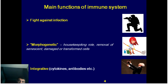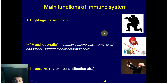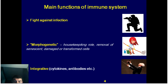Main functions of the immune system, and more typically of the adaptive immune system: usually we consider two sides. Most commonly when people talk about the immune system, they talk about the fight against infection. But we should also consider its housekeeping role, since the immune system silently removes senescent, damaged, and transformed cells. The third role is integrative, implemented through cytokines and antibodies, and that is why this system, along with the nervous and endocrine systems, is considered an integrative system of the body.